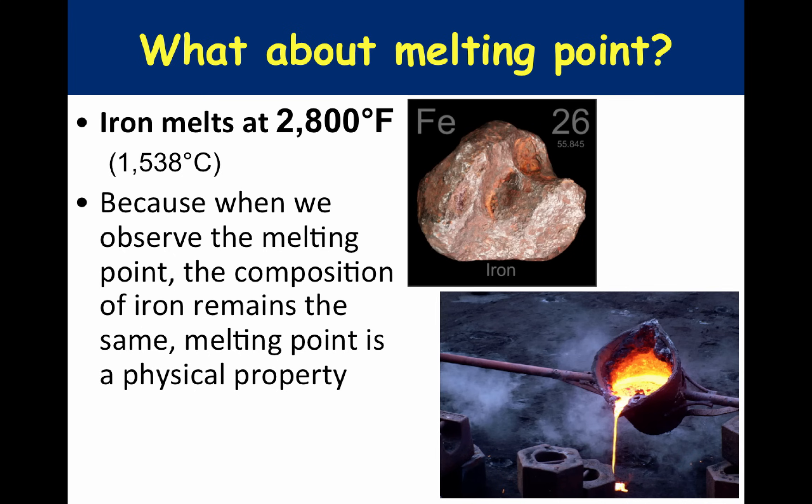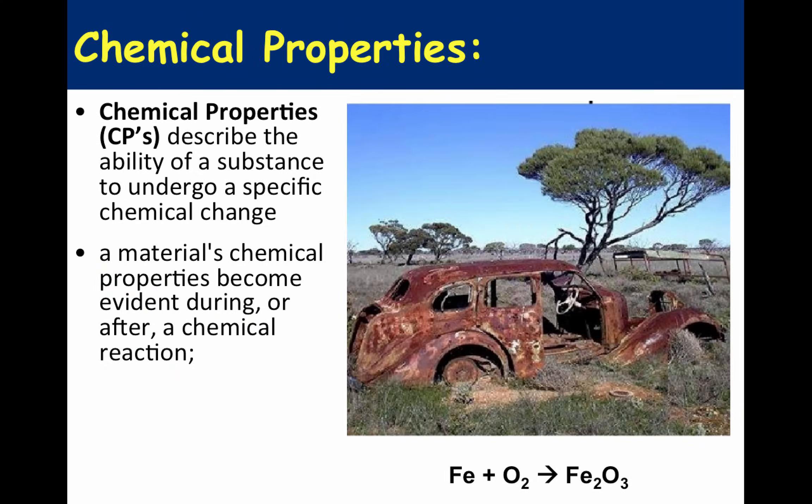So be careful — anytime we are measuring a melting point or even a boiling point, those are physical properties. Chemical properties, on the other hand, describe the ability of a substance to undergo a specific chemical change, and they only reveal themselves during or after a chemical reaction.